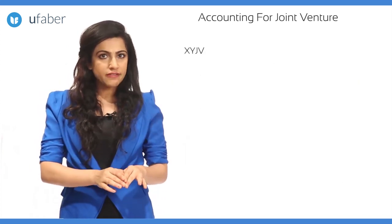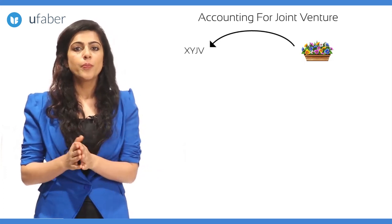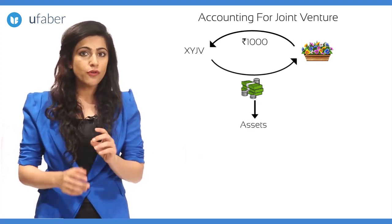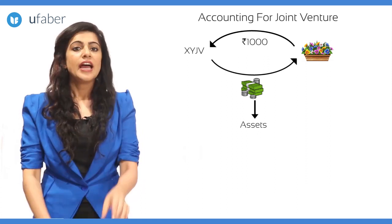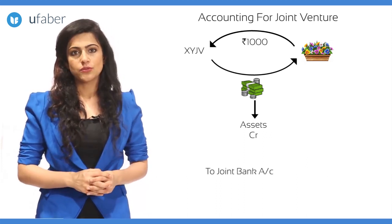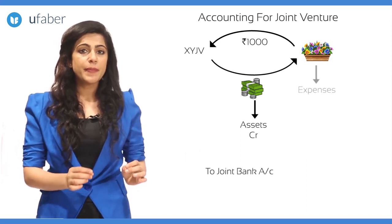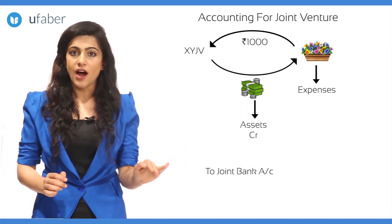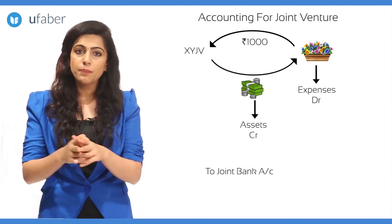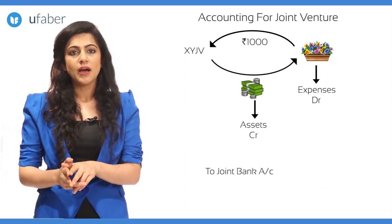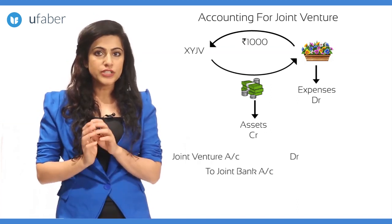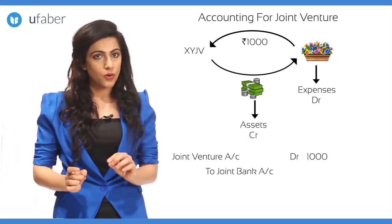Now XYJV is purchasing flowers for a marriage ceremony for rupees one thousand. The amount being paid is going out — it is an asset, so we credit joint bank account. The amount spent is an expense of the joint venture, as it is spent for the marriage ceremony contract taken by XYJV. Hence the journal entry is: joint venture account debit one thousand, to joint bank account one thousand.